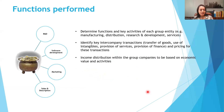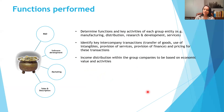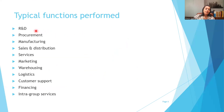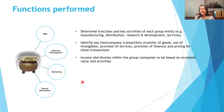Functional, Asset and Risk analysis can be divided into three steps: functions performed, risks assumed, and assets utilized. For functions performed, broad categories include R&D, procurement, manufacturing, sales and distribution, services, marketing, warehousing, logistics, customer support, and financing. The exercise involves determining the functions and key activities of each group entity and identifying key intercompany transactions and their pricing.